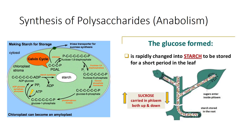Anabolic synthesis of glucose is called gluconeogenesis. Both fructose 6-phosphate and glucose 6-phosphate are versatile, useful molecules that enter many metabolic pathways.